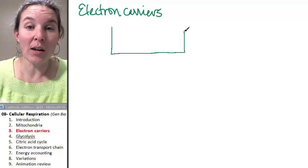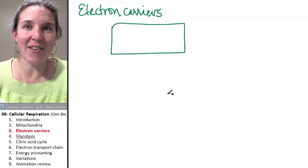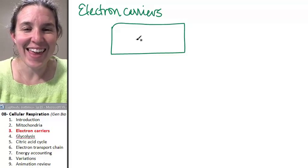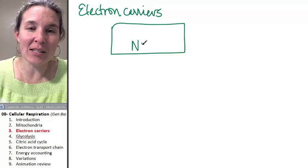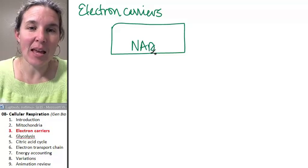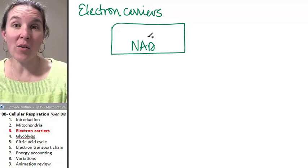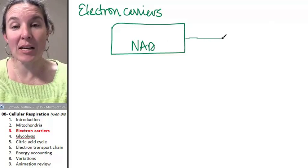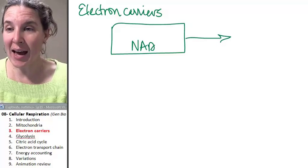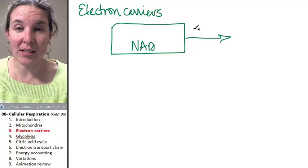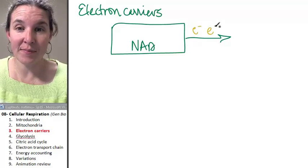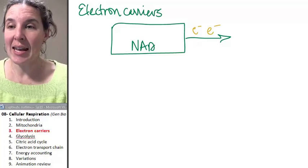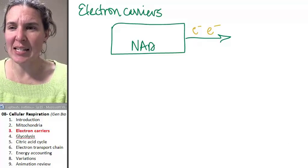You can think of an electron carrier as a car. And this car has a name. It's NAD. And right now, NAD is not carrying any electrons. But if we add two electrons into this mix, NAD becomes NADH.